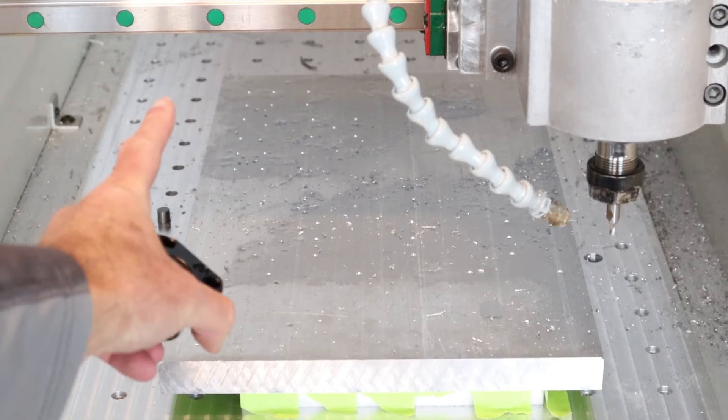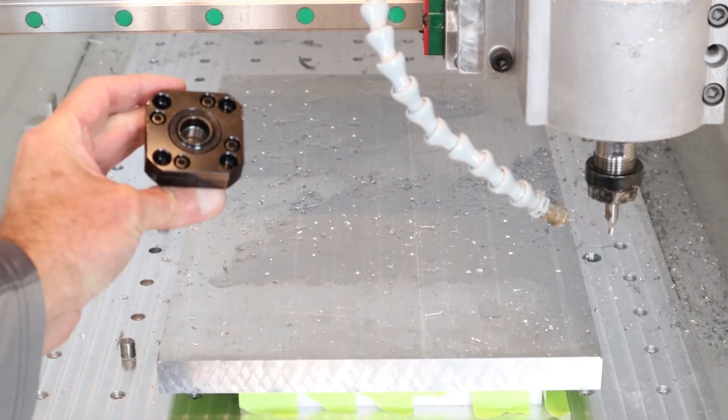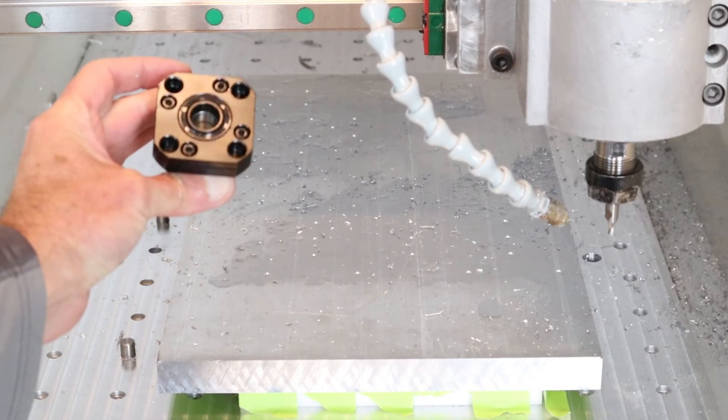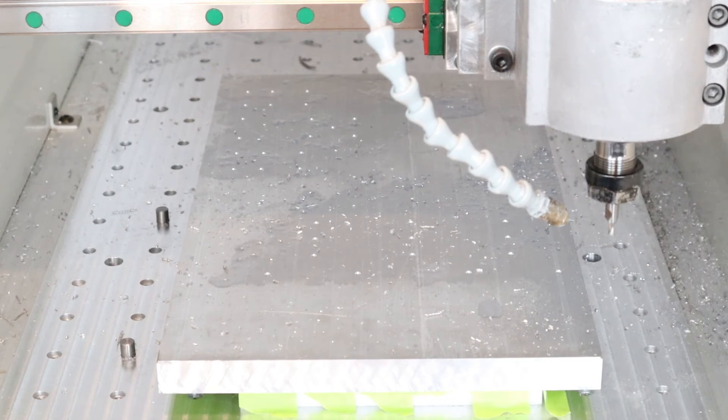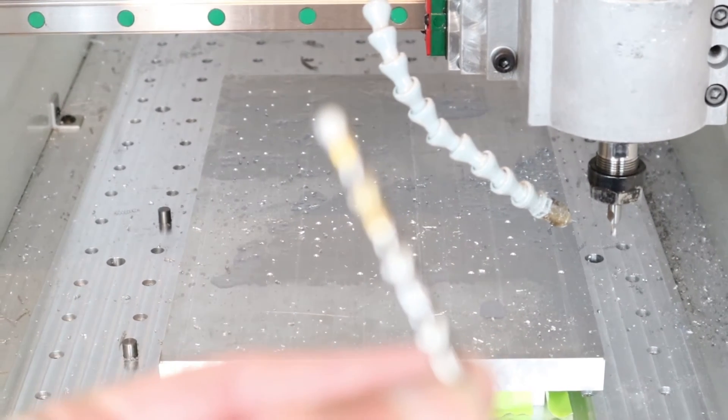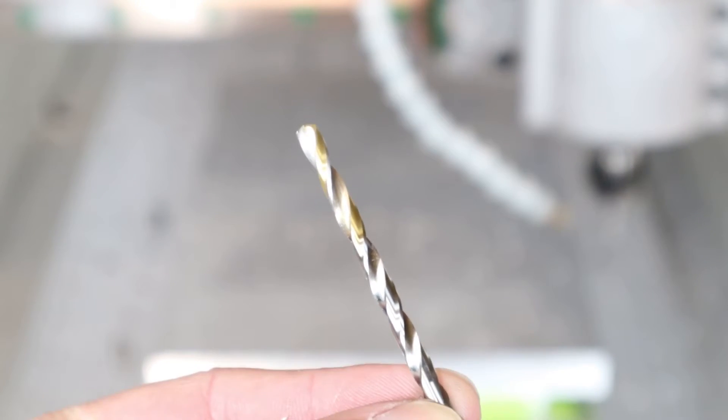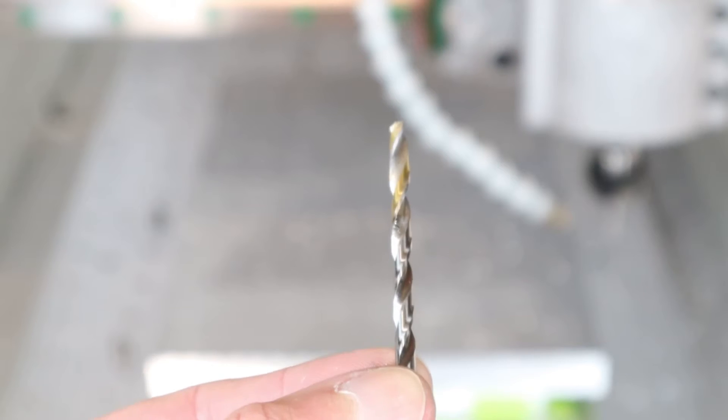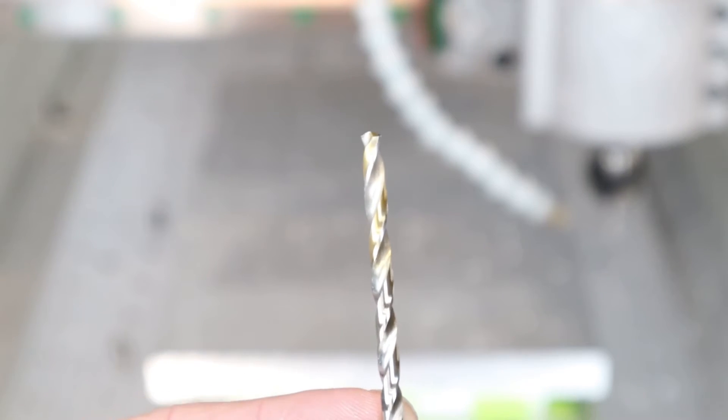There's going to be a pocket up here where this bearing block is going to sit for the ball screw, and it's going to be fastened with some M5 screws. Therefore we need to machine a hole with a diameter of 4.2 millimeters to cut the M5. This is unfortunately a regular length drill bit, it's not ideal, but I think we can make it work.